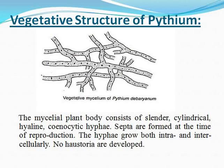Regarding the vegetative structure of Pythium — the vegetative structure is called Mycelium. The hyphae collectively form the Mycelium, which consists of slender, cylindrical, hyaline, coenocytic hyphae.